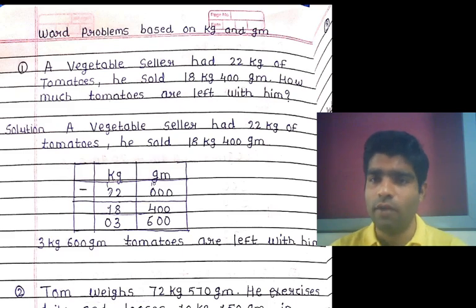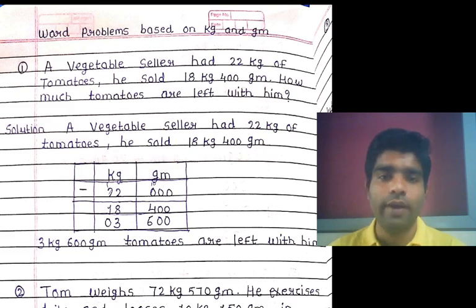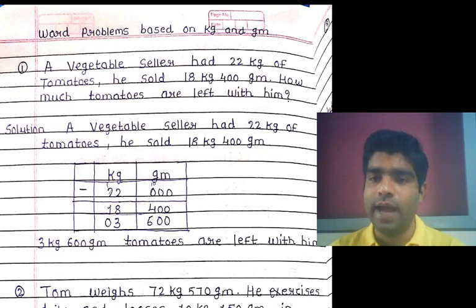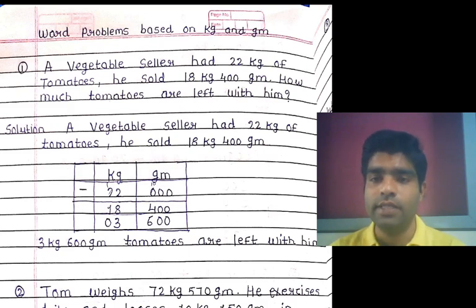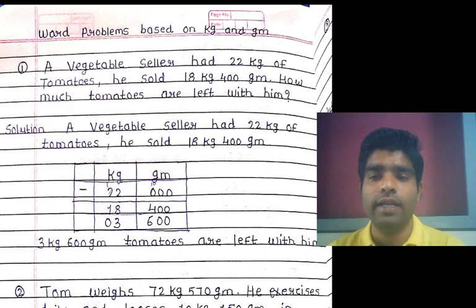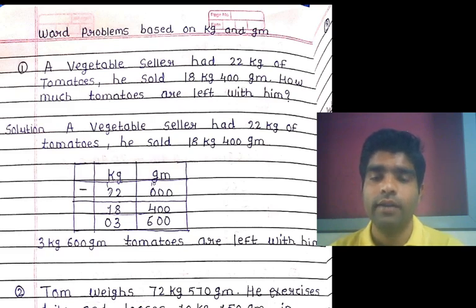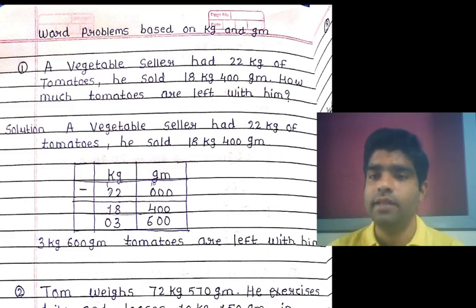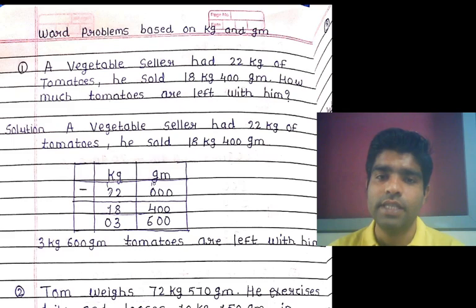To solve this, we use the arrange-in-column method in the form of kilogram and gram. The given condition is 22 kg of tomatoes, so we write 22 on the kilogram side and 000 on the gram side. Next, he sold 18 kg 400 grams, so we write 18 on the kilogram side and 400 on the gram side. Now we solve using subtraction, starting from the gram column.